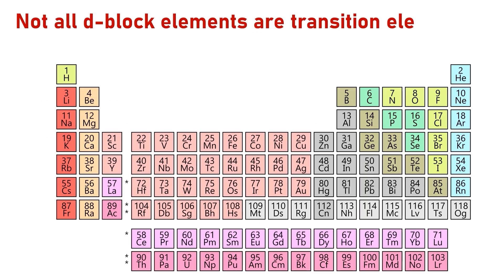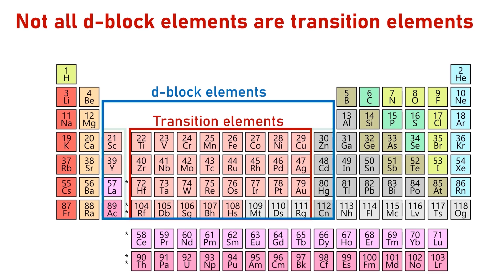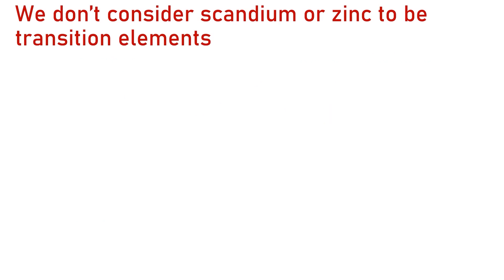Not all D-block elements are considered to be transition elements. Looking at the periodic table, the blue box represents the D-block elements, where the D orbitals are successively filled with electrons, while the red box represents the elements that are considered to be true transition elements. You can see that we excluded elements such as scandium and zinc from being transition elements.